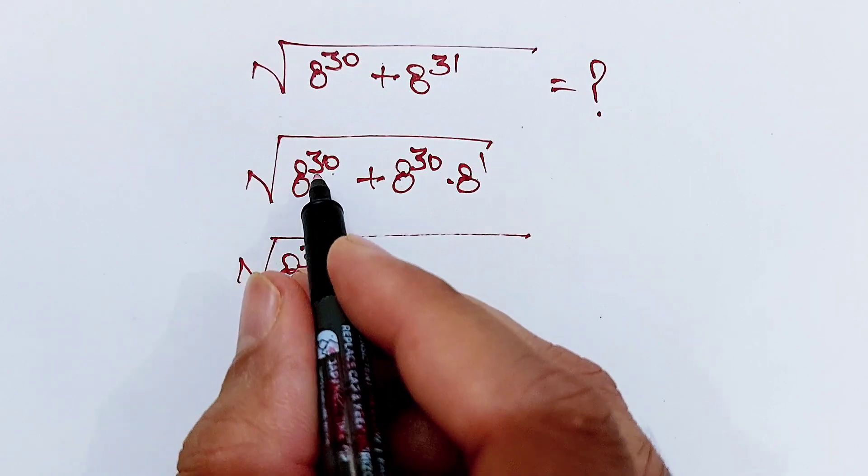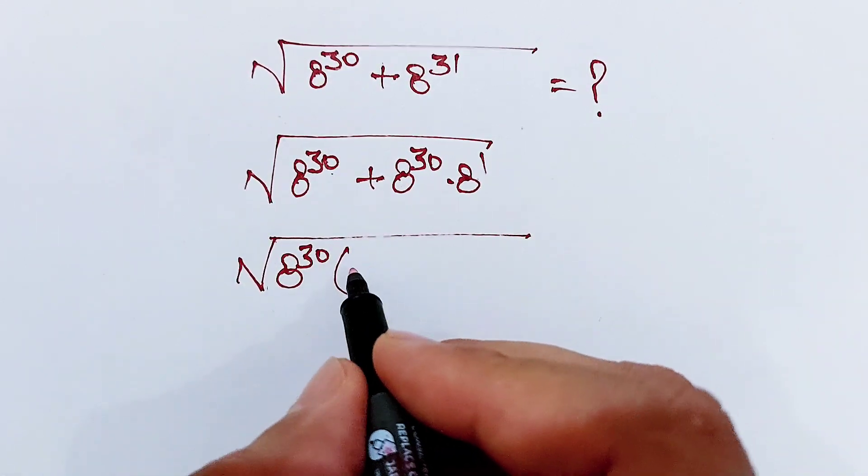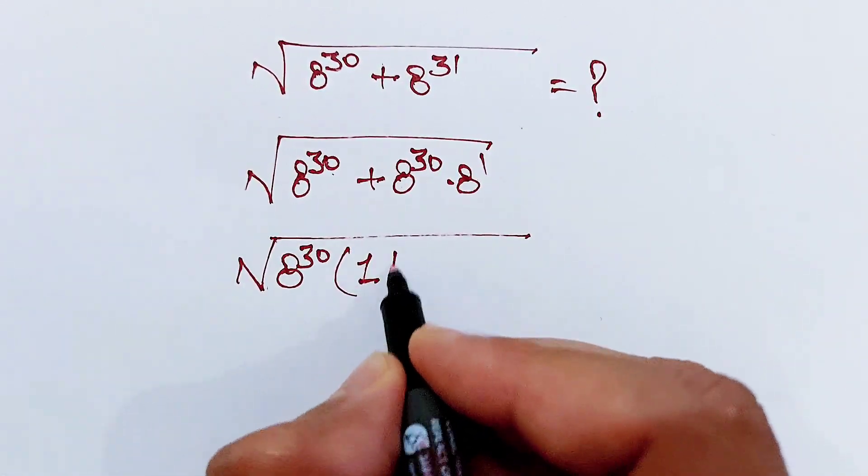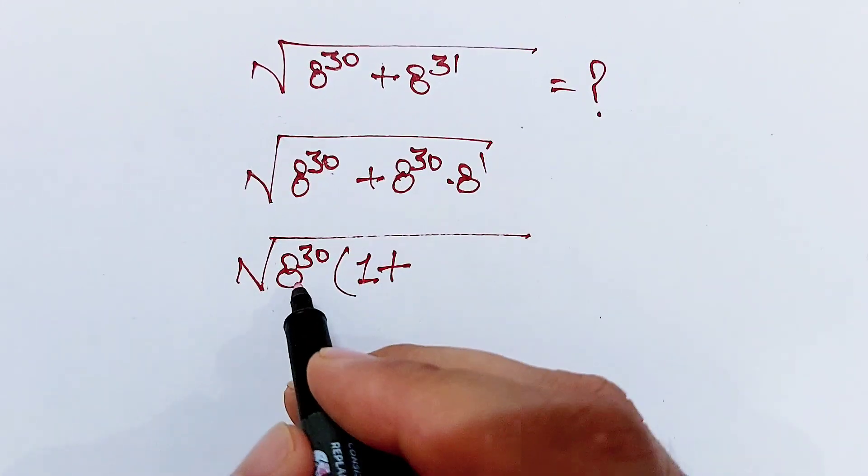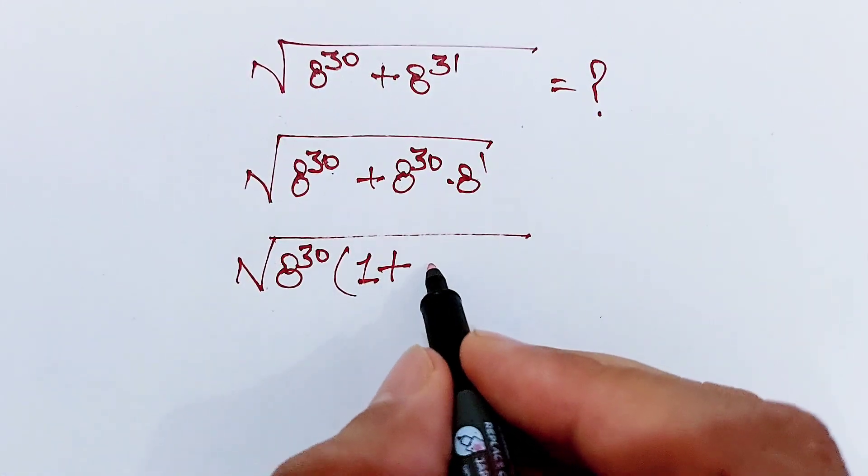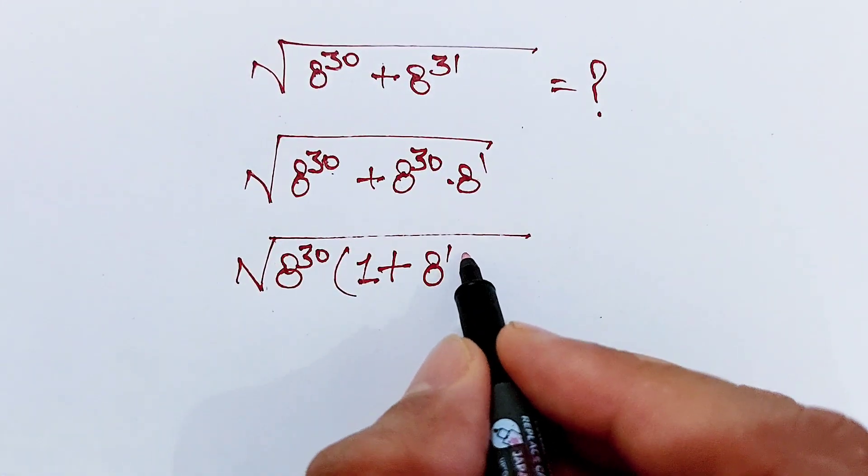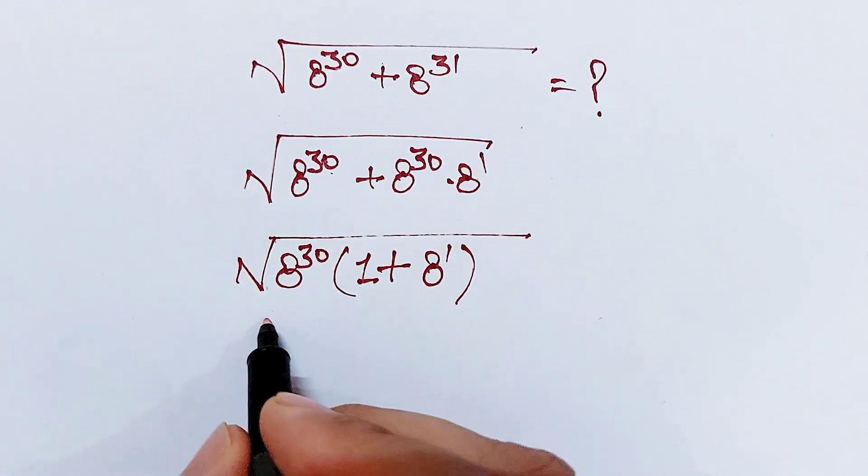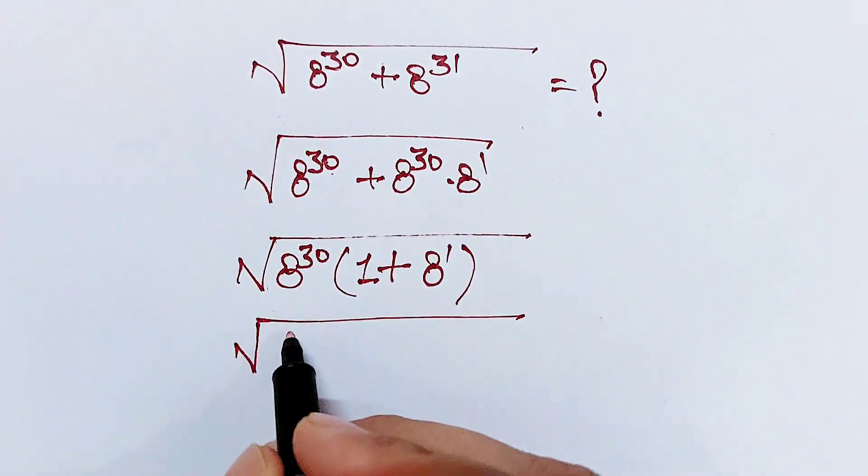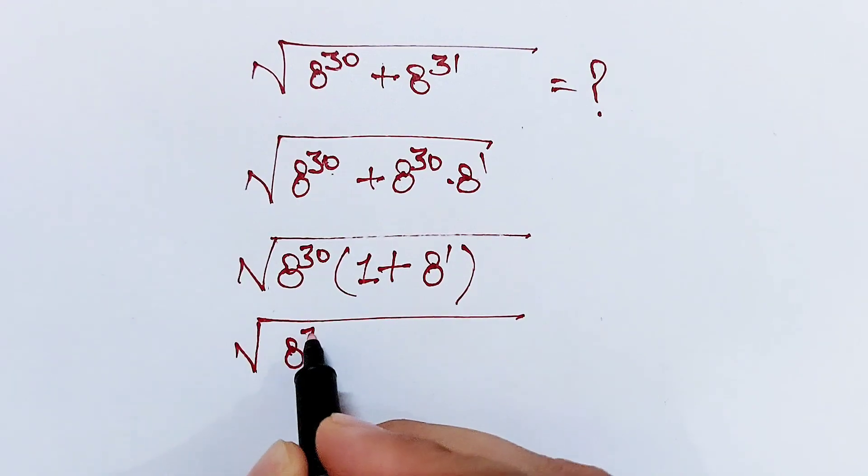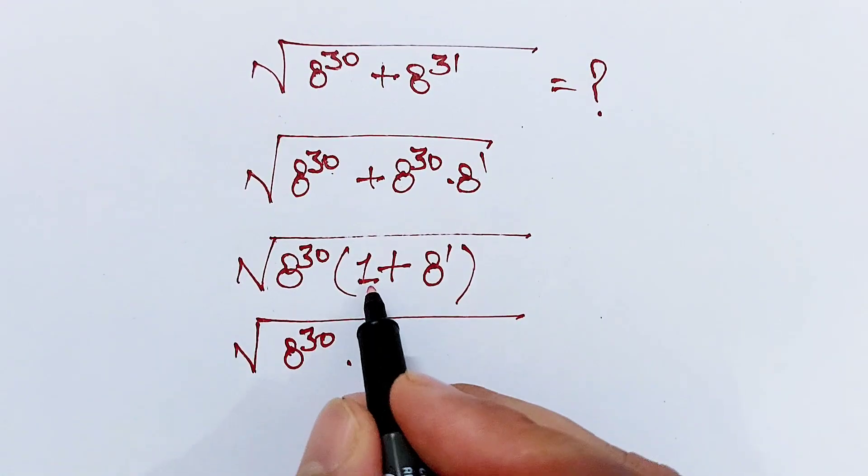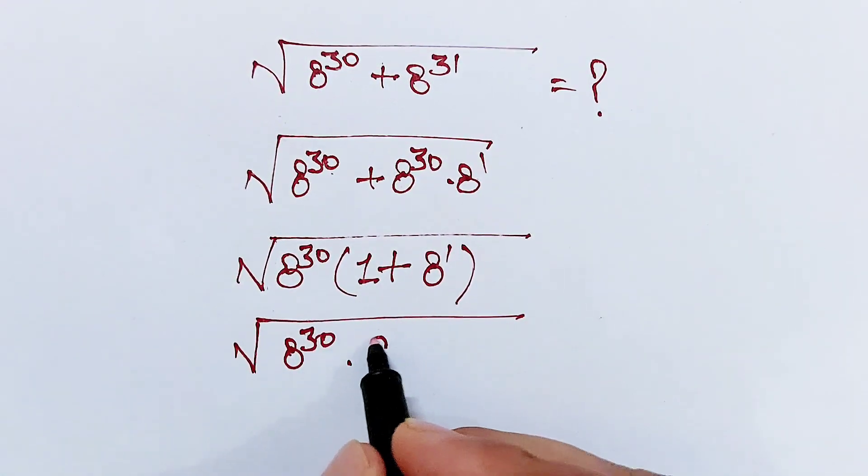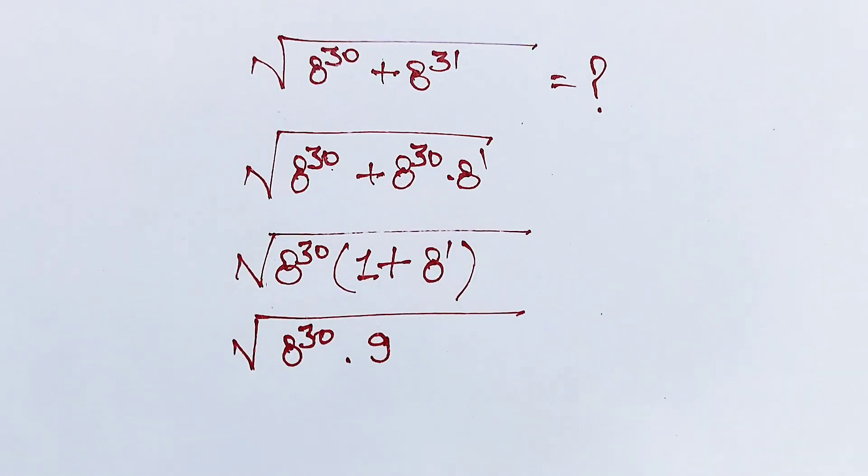What is left? 8^30 divided by 8^30 is 1, plus this term divided by this term, what is left is 8^1. Now, 8^30 times (8 + 1) equals 8^30 times 9.